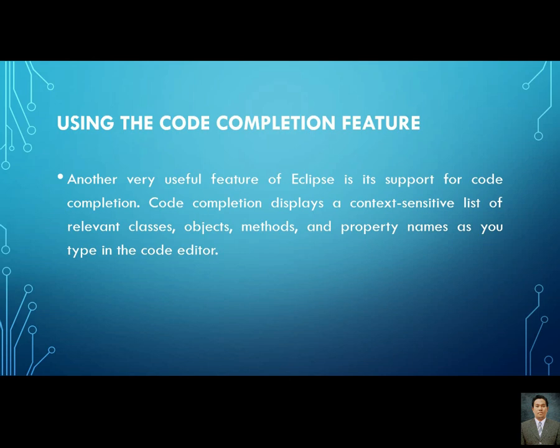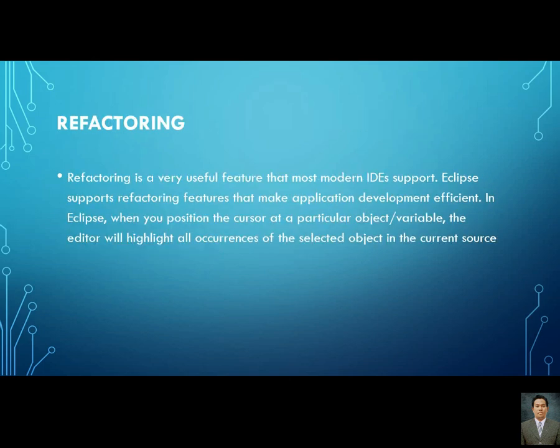Another very useful feature of Eclipse is its support for code completion. Code completion displays a context-sensitive list of relevant classes, objects, methods, and property names as you type in the code editor. For example, as you're coding, Eclipse will suggest options, and if you select one, it will provide auto-generated code.